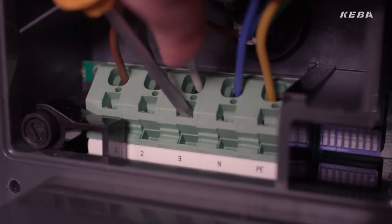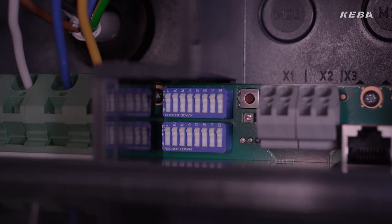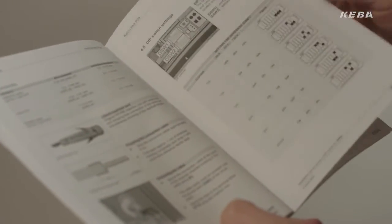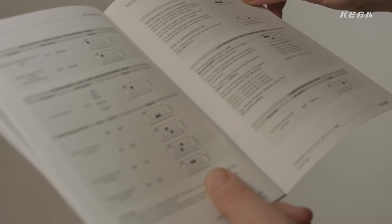Depending on the available output and product version, the wallbox is individually configured by using the dip switches inside the connection area. Please see the installation manual for the relevant dip switch settings for your particular installation.